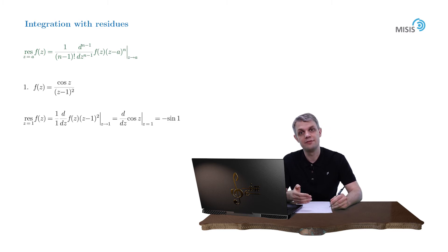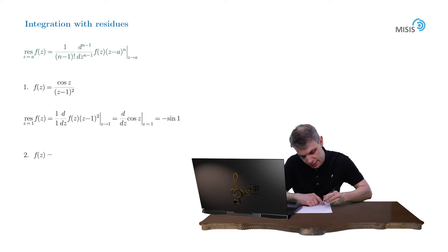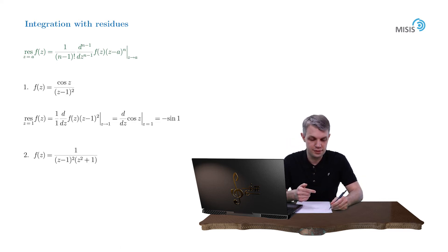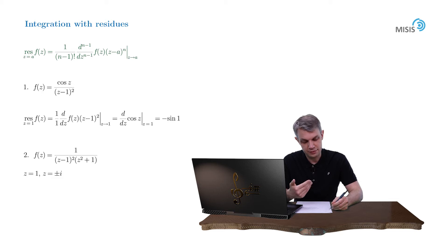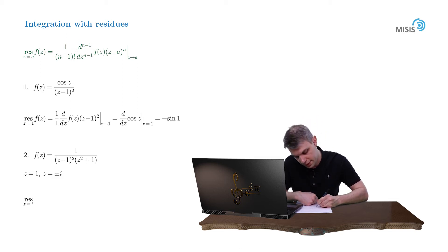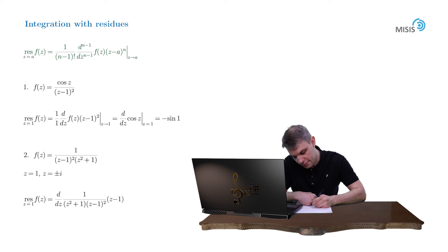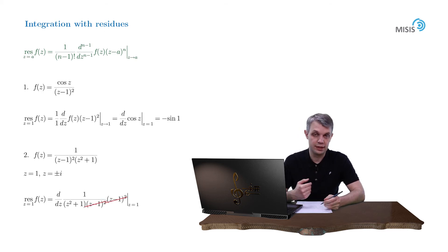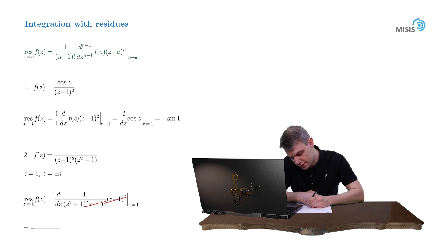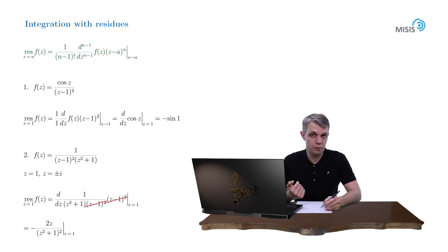Our second example is from the previous video: f(z) equals 1 over [(z minus 1) squared times (z squared plus 1)]. Let's find the residues at z equals 1 and z equals plus or minus i. Since z equals 1 is a second-order pole, our formula gives the first derivative of 1 over (z squared plus 1) — after the (z minus 1) squared terms cancel — which is minus 2z over (z squared plus 1) squared. Evaluated at z equals 1, we obtain minus 2 over 4, which is minus one-half.